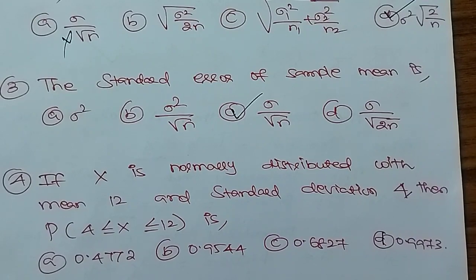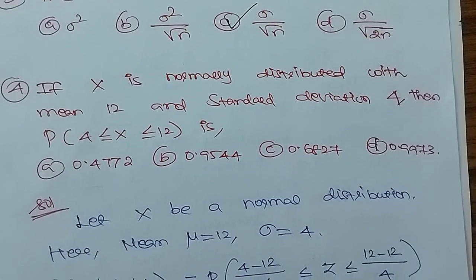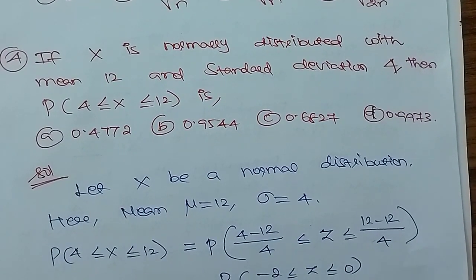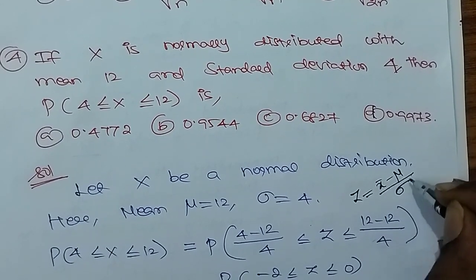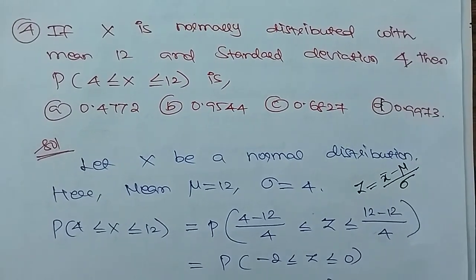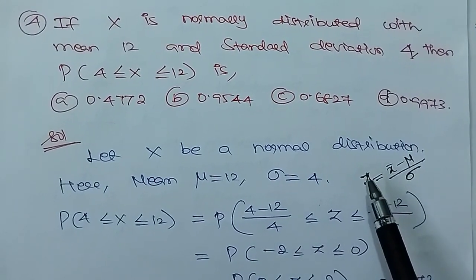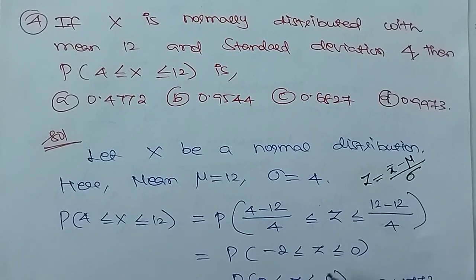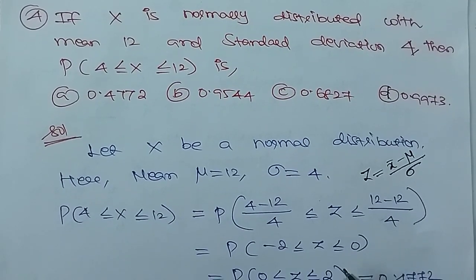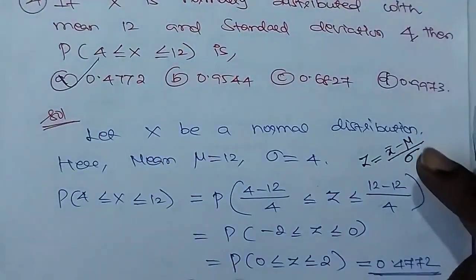This is a normal distribution problem. Mean mu = 12, sigma = 4. By the Z distribution: Z = (X - mu)/sigma. Here X = 4, mu = 12, sigma = 4, giving Z from -2 to 0. The probability from 0 to 2 — the answer is 0.4772.